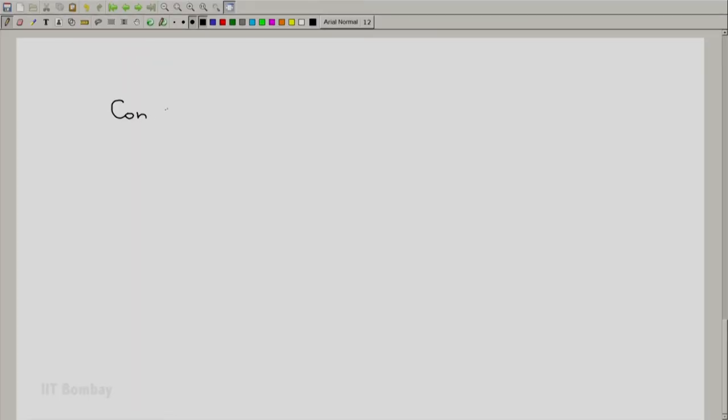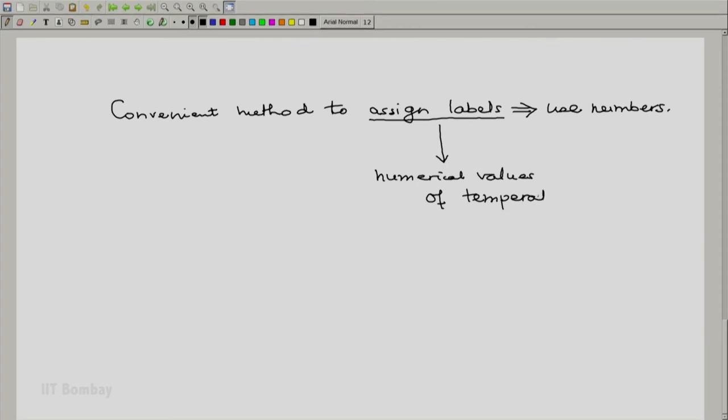So a convenient method to assign labels is to use numbers. And then this assignment of labels leading to numerical values of temperature leads to what we call thermometric scales.